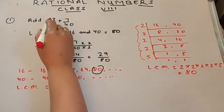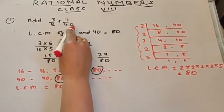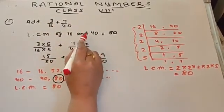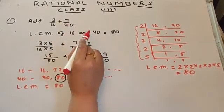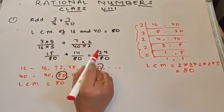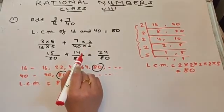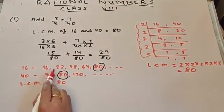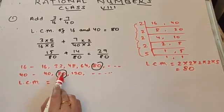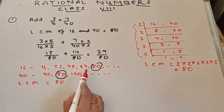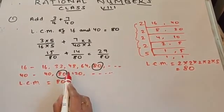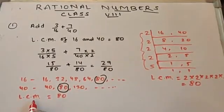Let's solve this question: Add 3 upon 16 plus 7 upon 40. The concept is that when we add or subtract rational numbers — not multiplication or division — the first thing is to make their denominators equal by taking their LCM. LCM is the least common multiple. The multiples of 16 are 16, 32, 48 and so on. The multiples of 40 are 40, 80, 120 and so on. We take the lowest multiple common to both tables. Therefore LCM is 80.